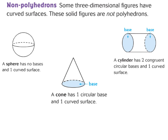The other family I want to share with you are non-polyhedrons, meaning they have curved surfaces. Some three-dimensional figures have curved surfaces, and these solid figures are not polyhedrons. A polyhedron cannot roll — it's all made up of polygons. The first non-polyhedron is a sphere: it has no bases and just one curved surface, which means it can continuously roll. The next is a cone: it has one circular base and one curved surface.